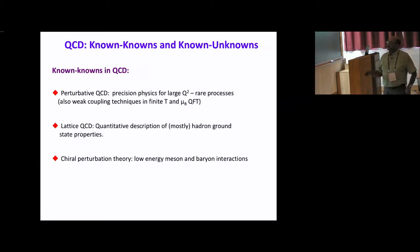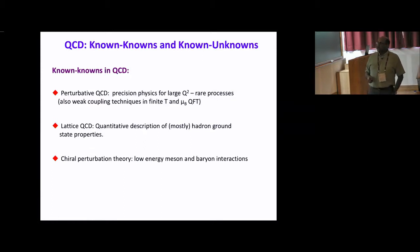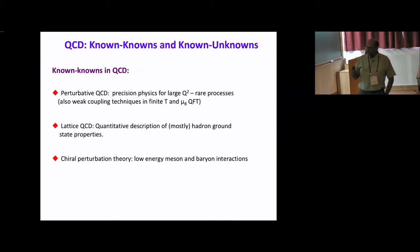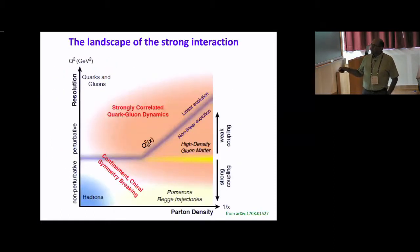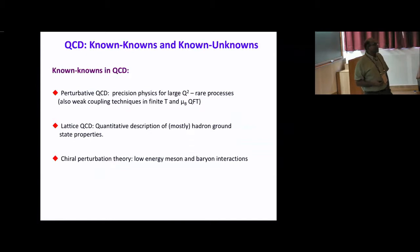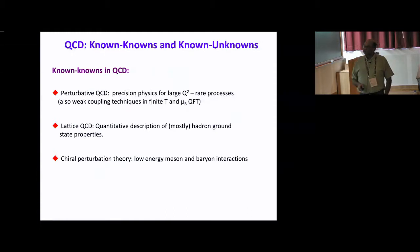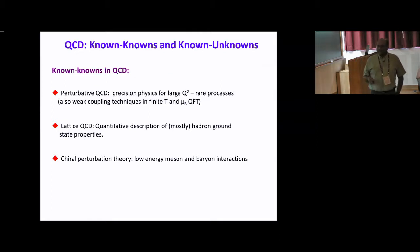Another corner we understand in QCD is lattice QCD, which provides a quantitative description of many features of static properties in QCD. And then there's chiral perturbation theory, which sits in the corner of very non-perturbative physics at low energies. It's an effective theory of QCD that's exact in some limit, telling us about the proper low-energy properties of meson and baryon interactions.